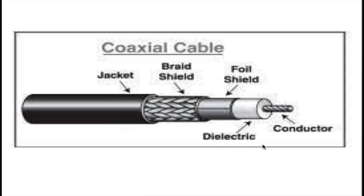Coaxial cables consist of a central conductor which is surrounded by a dielectric insulator, which in turn is surrounded by a conductive shield. The jacket protects the core from the elements.